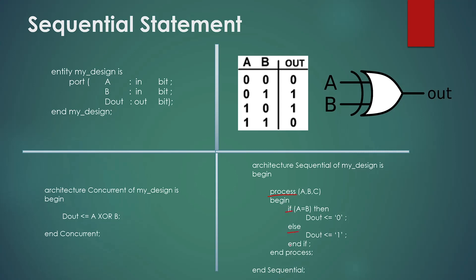So now if you simulate both of your architectures, both will give you the same results. And when you synthesize them, you will get the XOR gate as a semantic output. So both the architectures are good and giving the same results in the simulation and synthesis.